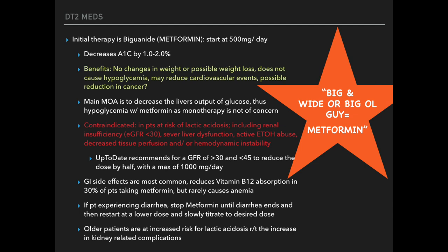The first diabetic medication discussed is metformin, which is a biguanide, and it starts at a 500 milligram a day dose. In my head, I remember 'big and wide' — big old guy metformin. It's going to decrease the A1C by 1 to 2%, so it's extremely effective. There are a lot of benefits: there's been shown to be either no change in weight or even possible weight loss, it does not cause hypoglycemia. The mechanism of action is that the drug decreases the liver's output of glucose, which explains why hypoglycemia isn't a concern.